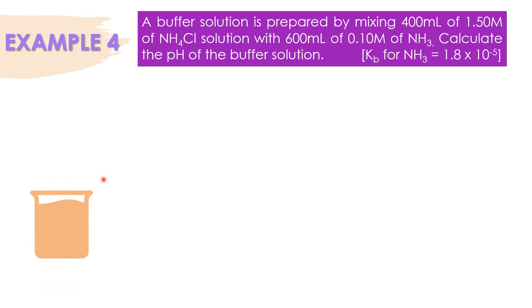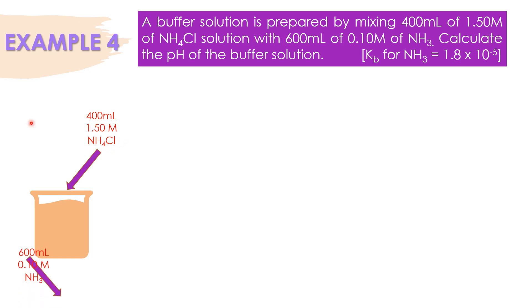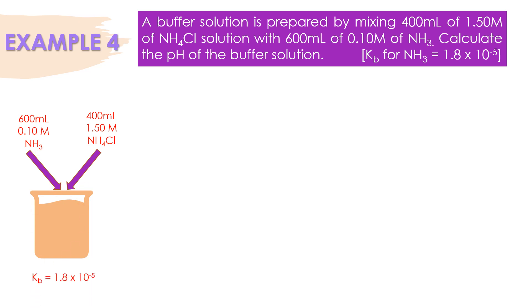From the question, a buffer solution is prepared by mixing 400 ml of 1.50 molar NH4Cl with 600 ml of 0.10 molar of NH3. Calculate the pH of the buffer solution — and the question gives us Kb.